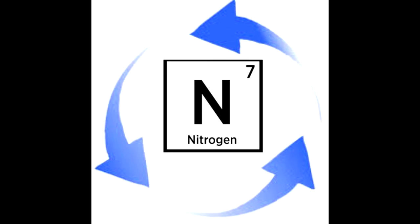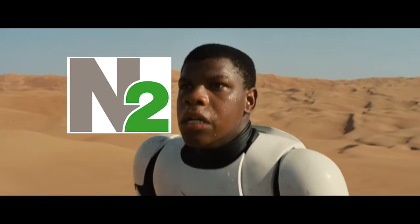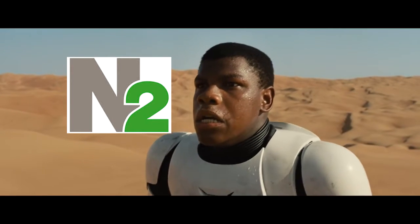Today I'm going to tell you about the nitrogen cycle and how it works. So let's begin, shall we? Nitrogen is the seventh element on the periodic table. Nitrogen gas, N2, makes up 72% of the air we breathe.